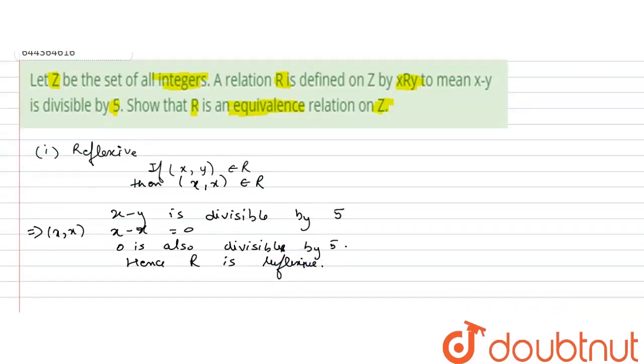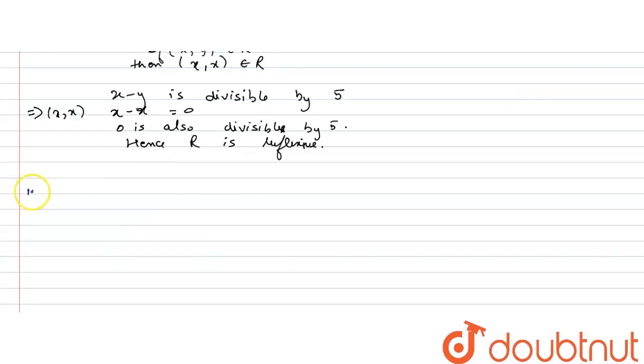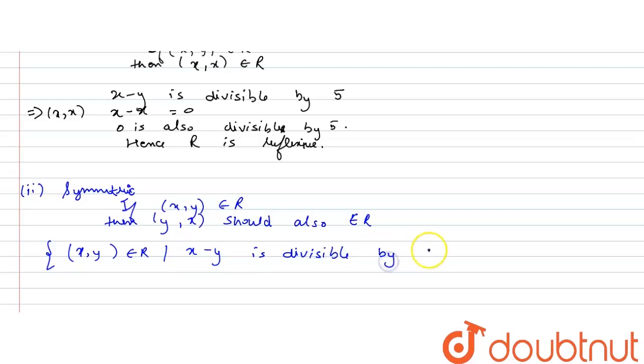Now, let us look at symmetric. A relation is symmetric if (x,y) belongs to R, then (y,x) should also belong to R. That is, according to the given relation, (x,y) belongs to R such that x minus y is divisible by 5.